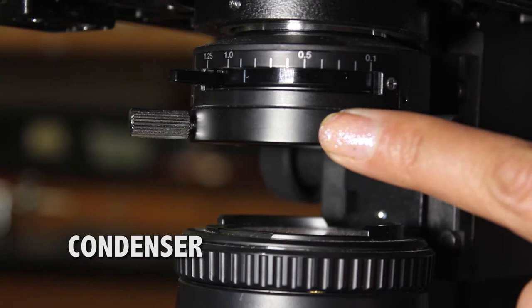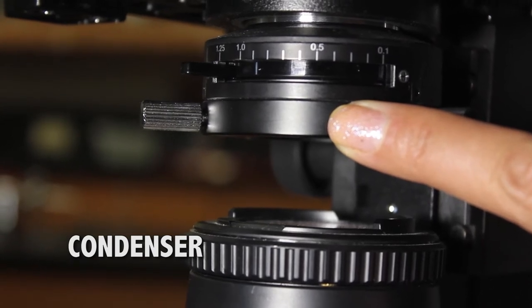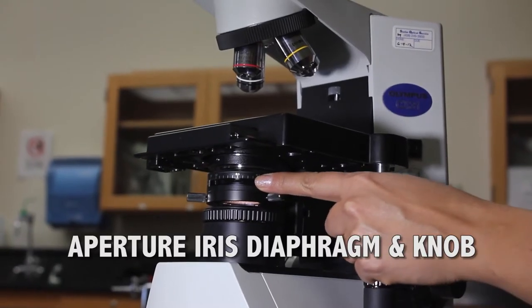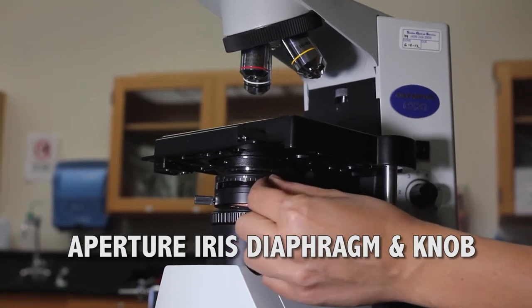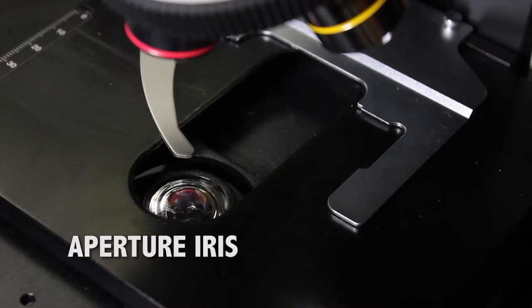Condenser, this focuses the light on the specimen. Aperture iris diaphragm controls the contrast. Diaphragm control knob will open and close the aperture iris.